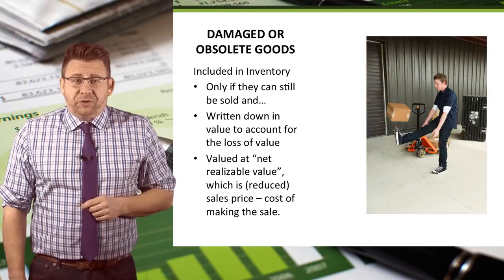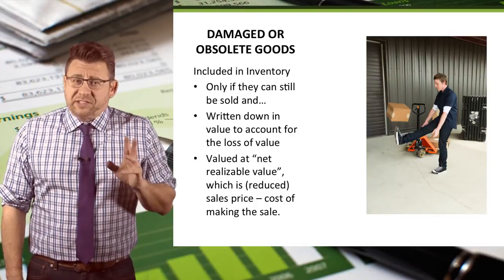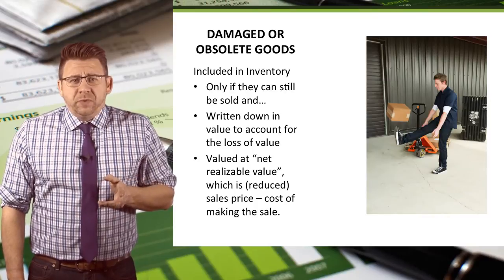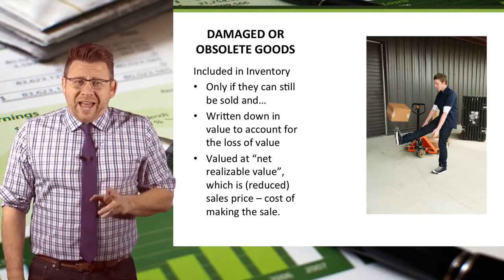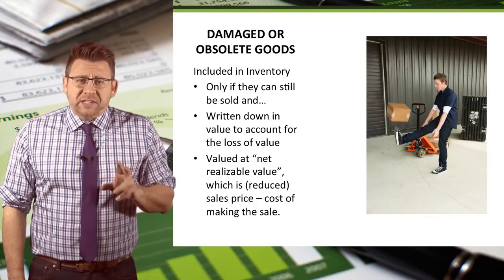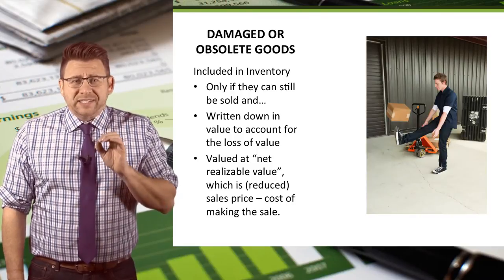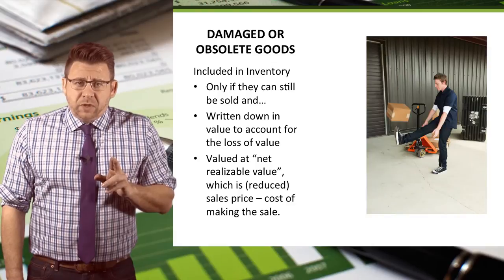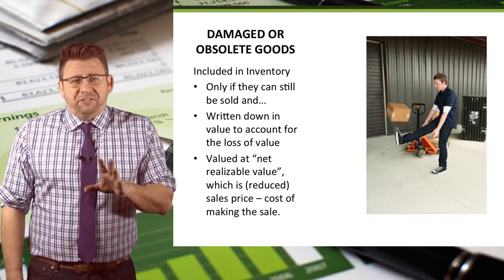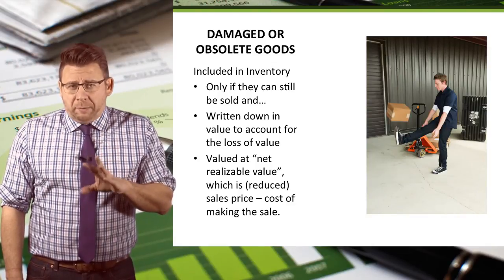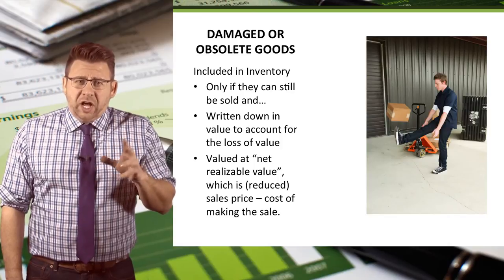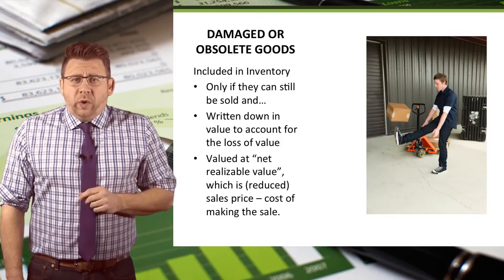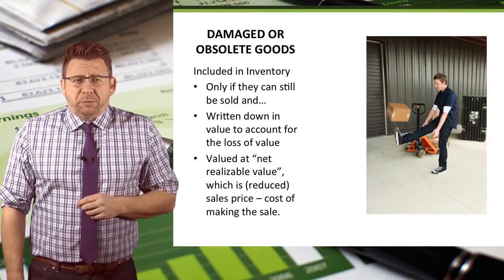During a physical count of inventory, it is possible to discover that some goods are damaged or obsolete. When this happens, these items should not be included in physical inventory unless it is still possible to sell the items. If it is possible, those items usually have to be valued at a lower amount than the regular non-damaged or obsolete costs. We call this the net realizable value.